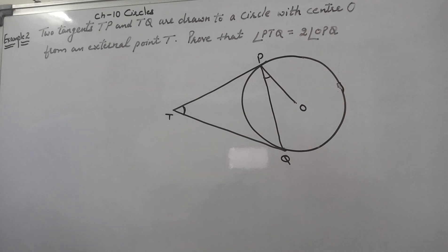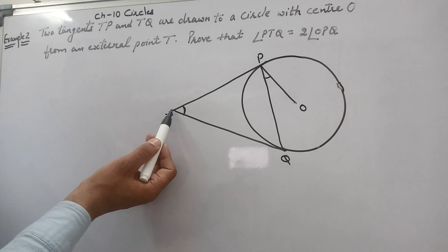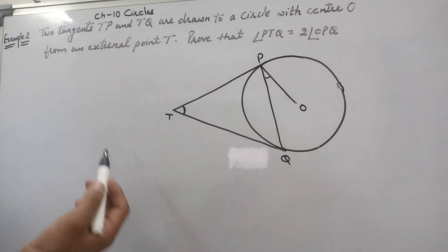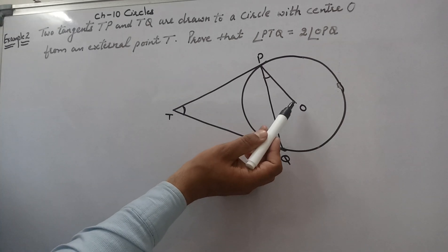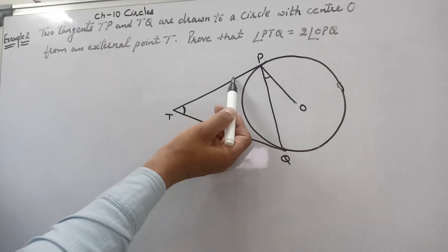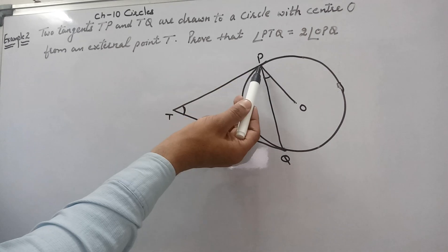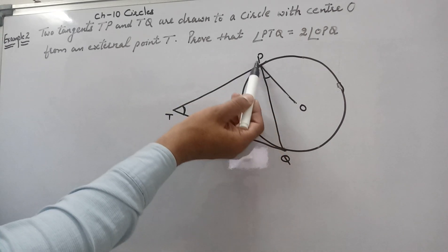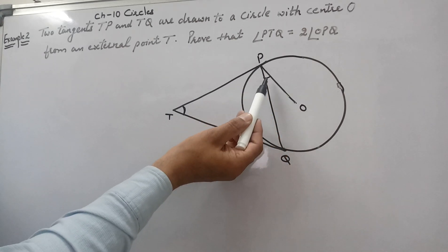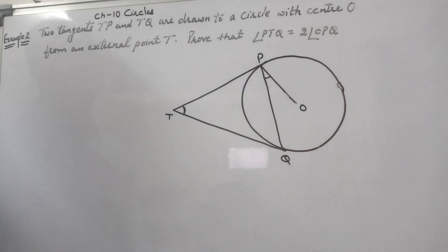We know that tangents from an external point to a circle are equal, so TP is equal to TQ. We also know that angle OPT is 90 degrees, because a radius is perpendicular to the tangent through the point of contact. So this full angle OPT is 90 degrees. We should know these two properties to solve this question.